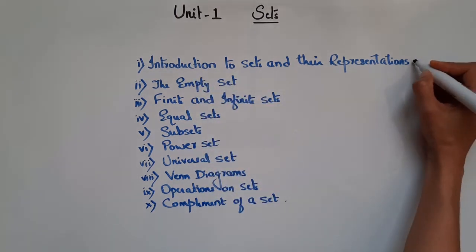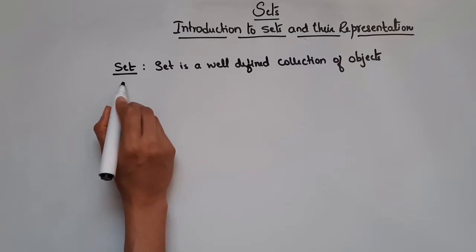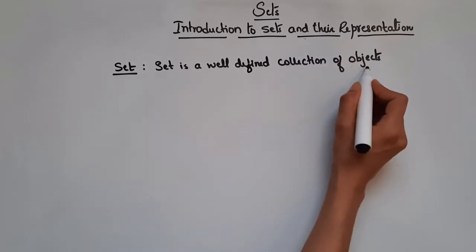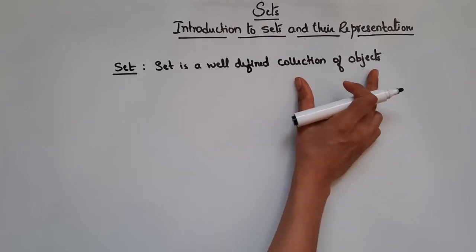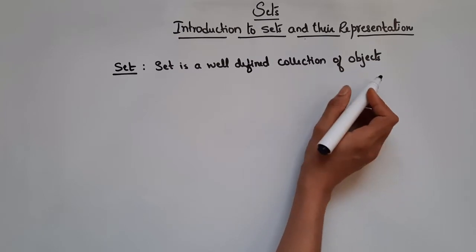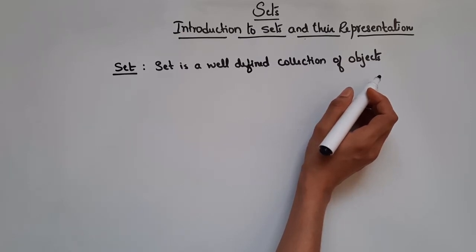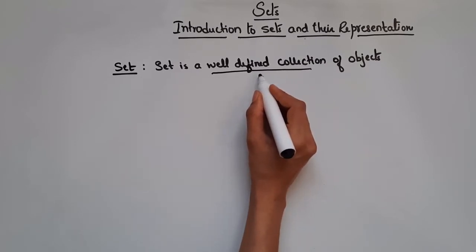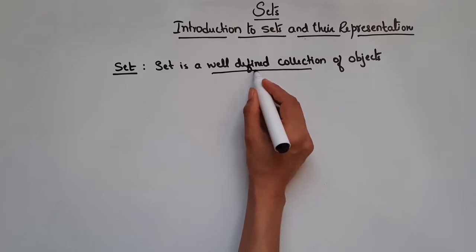In this video we will see introduction to sets and their representation. First, let's see what is the definition of a set. A set is a well-defined collection of objects. Collection of objects is nothing but a group of objects or grouping objects on some particular basis — for example, rivers of India, a cricket team, or a pack of cards. A set is a well-defined collection, meaning the collection will not vary from person to person.